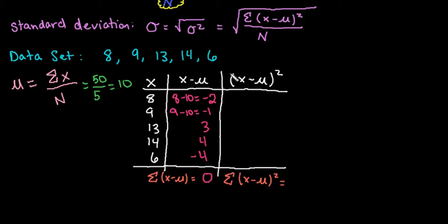Which is why we have added this additional column where we square it. So I would take the negative 2, square it, which would give us 4, the negative 1 squared, which gives us 1, and continue in this pattern, so 3 squared is 9, 4 squared is 16, negative 4 squared is 16, and now we have positive values to work with, so that we can add them together, and we would have a sum other than 0. So we would add this column, which gives us a total of 46.